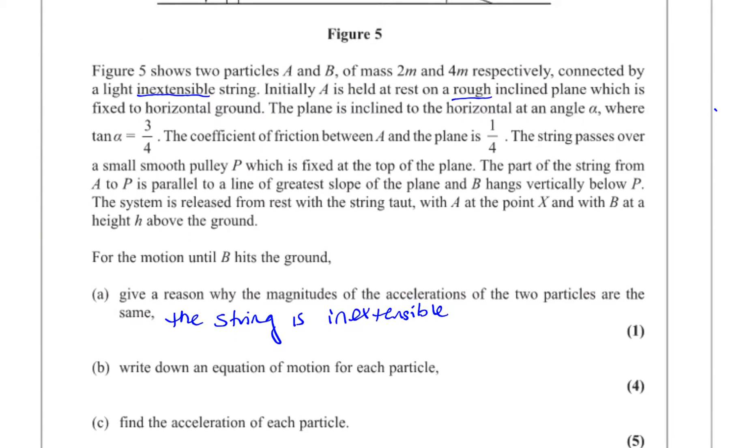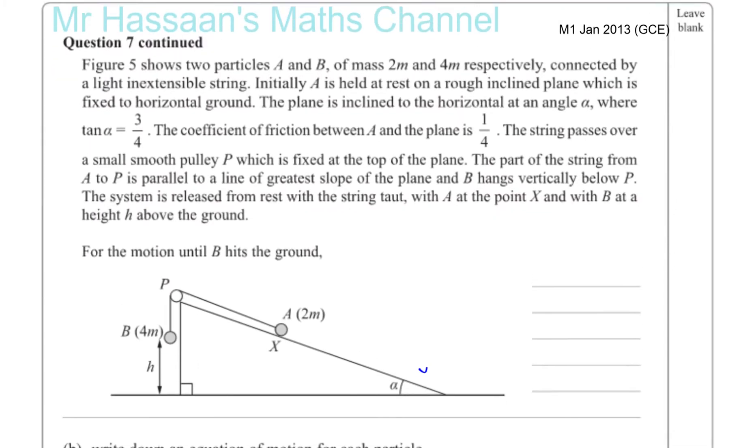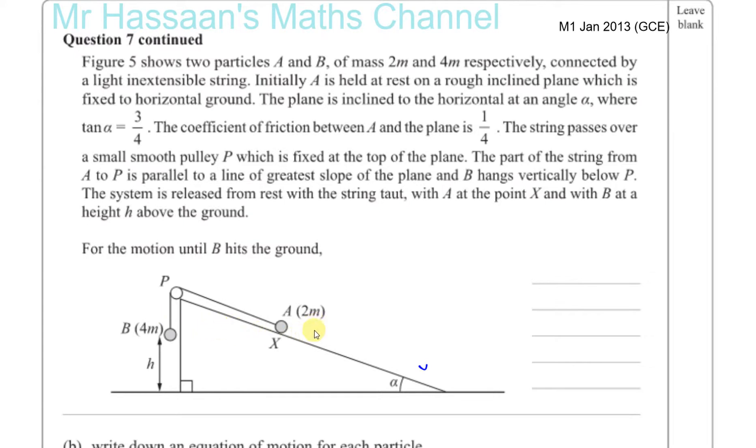Then it says write down an equation of motion for each particle and find the acceleration of each particle. What you need to do here is you need to make a very clear diagram of all the forces acting on the particle. What they basically want you to do is resolve the forces for each particle. So you're going to use F equals MA. You'll end up with something which tells you about the acceleration of each particle. So let's first of all just put down all the forces acting on both particles. So for B, you have its weight acting down. And its weight is mass times acceleration, which is G, 4mg. Because that's 4mg, its weight acting down. And you have the tension of the string, which is holding it up.